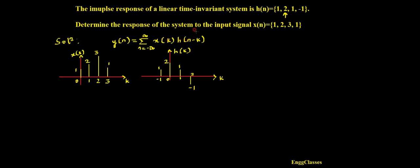So now let me sketch x of k. If I change the variable n to k, I would get h of k, and if I change n with k, I would get x of k. So x of k has values {1, 2, 3, 1}: at position 0 its amplitude is 1, at position 1 its amplitude is 2, at position 2 its amplitude is 3, and at position 3 its amplitude is 1.